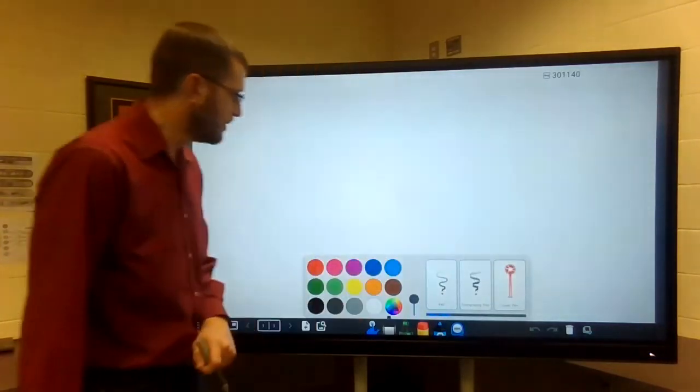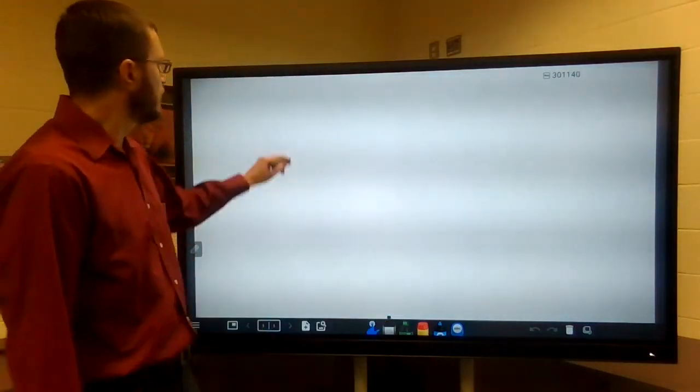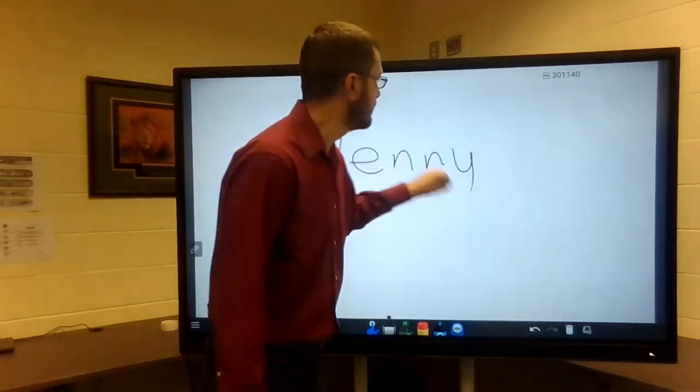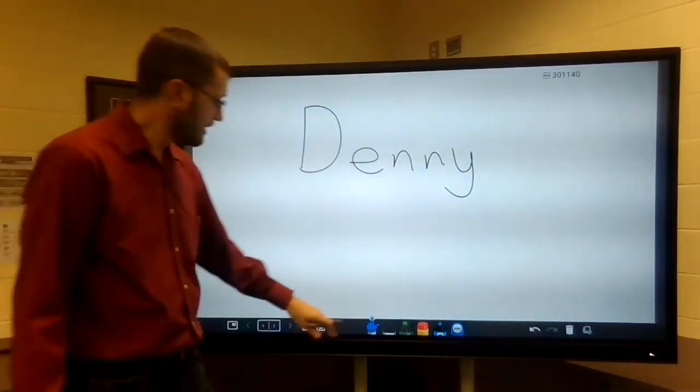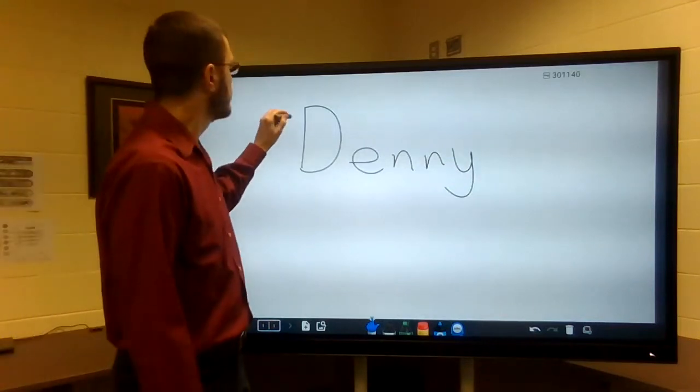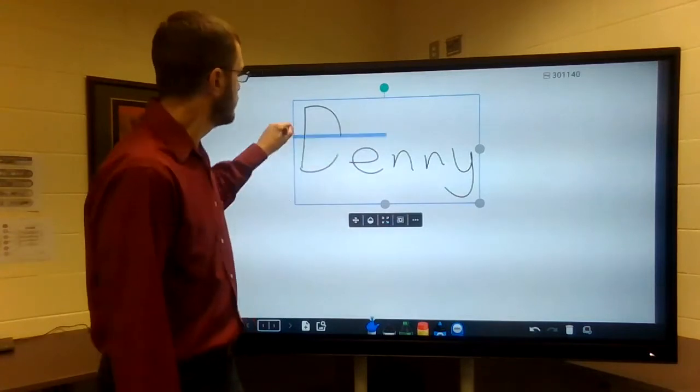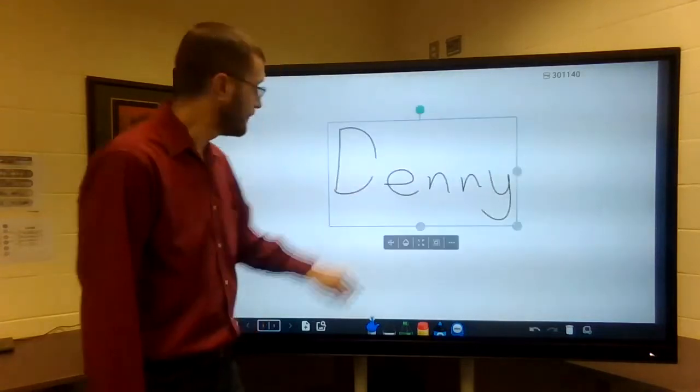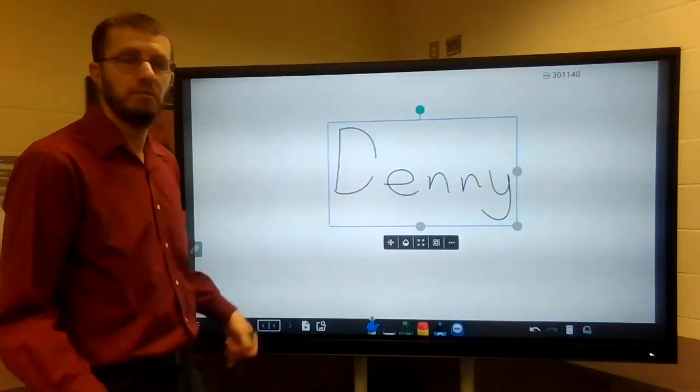I'm just going to select the simple pen option, exit out of that, and then I'm going to write something on the screen. Once I have something written on the screen, now that selection option becomes valid. So I can actually use that if I want to select what I wrote and maybe move it around the screen like so. And there are several other options there at your disposal.